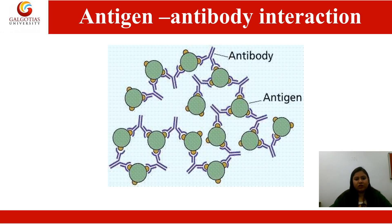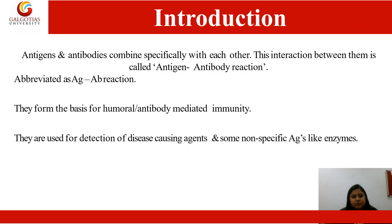The objective of the present study is to determine the origin of species using blood. The basis of this determination is the antigens and antibodies which are present in the blood, and they help us to determine the origin.